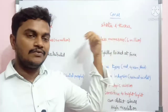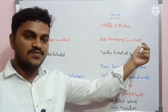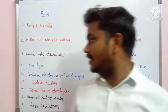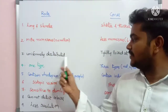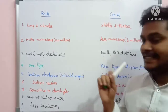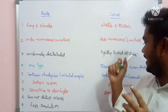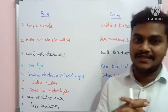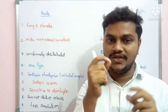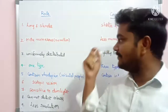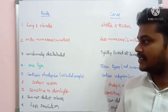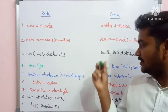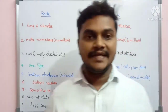Rods number 120 million and cones number 6 million. Rods are uniformly distributed, while cones are tightly packed at the fovea centralis region.